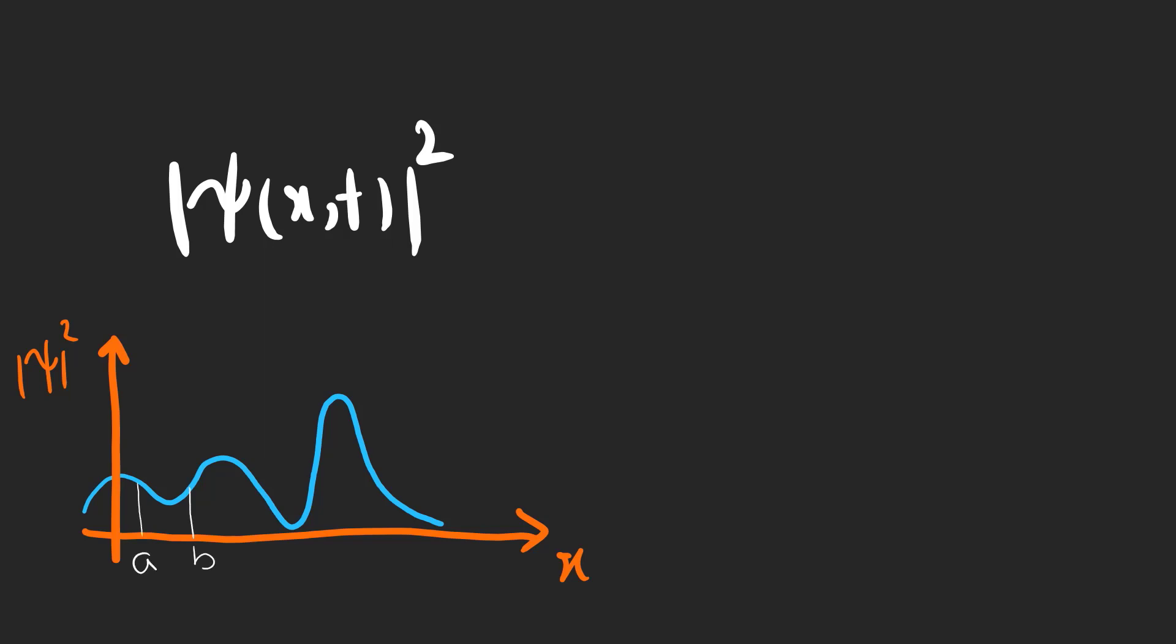If we want to measure the probability of finding the particle between a and b, we need to find the area under psi squared graph by calculating the integral psi squared dx from a to b.